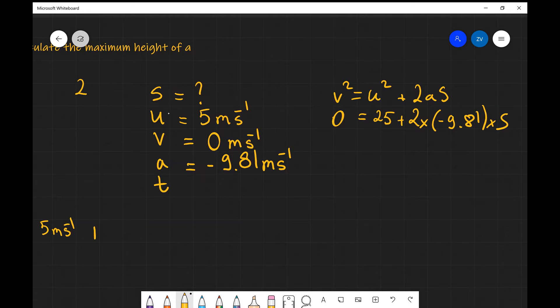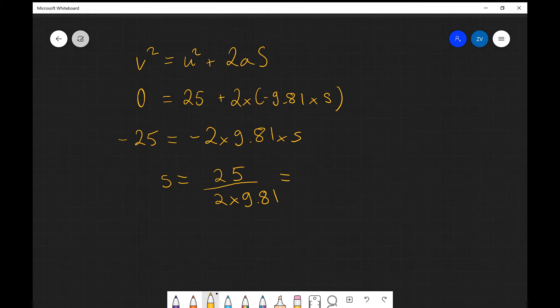So all we need to do really is rearrange for S. So what we're going to get is that minus 2 times 9.81 times S is going to equal minus 25, just bringing the minus 25 over onto the other side. The two minus signs are going to cancel out, so what I will be left with, if I was to rearrange for S, will be that S will be 25 divided by 2 times 9.81. And if I was to put this into a calculator, I'm going to get 1.27 meters for the maximum height of this projectile.